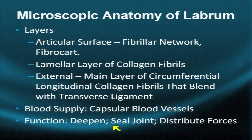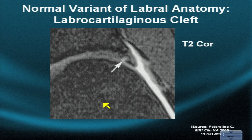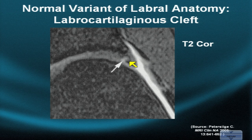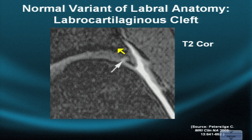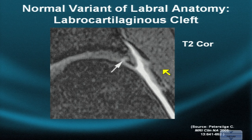The labrum deepens the joint, seals it, and distributes forces in internal and external rotation, abduction, and adduction. A higher-resolution view demonstrates stratification — darker deep, lighter more superficial, more fibrocartilage-like deeper and more collagen-like superficially. The sublabral sulcus is found at the eight o'clock position, just below the anterior equator of the hip in the anterior-inferior quadrant. It appears more smooth and rounded in the coronal projection and more knife-blade-like in the axial projection. The narrow transition between the acetabular labrum and hyaline cartilage is apparent on high-resolution imaging.